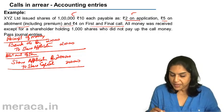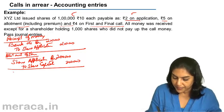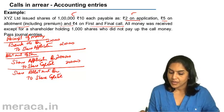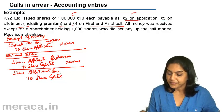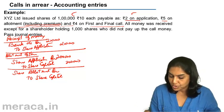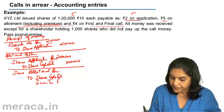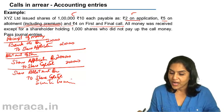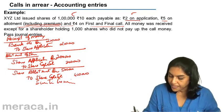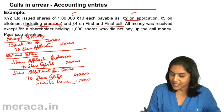On allotment of shares, allotment money also becomes due. The entry is: share allotment account debit to share capital and to securities premium. The total allotment money is 1 lakh shares into 5 = 5 lakhs. Of this, 1 lakh into 4 = 4 lakhs is capitalized to share capital, and 1 lakh into 1 = 1 lakh goes to securities premium.